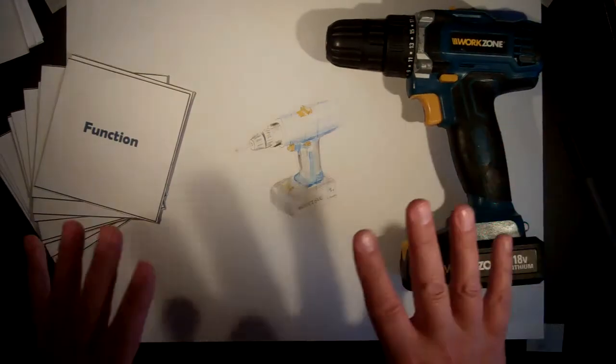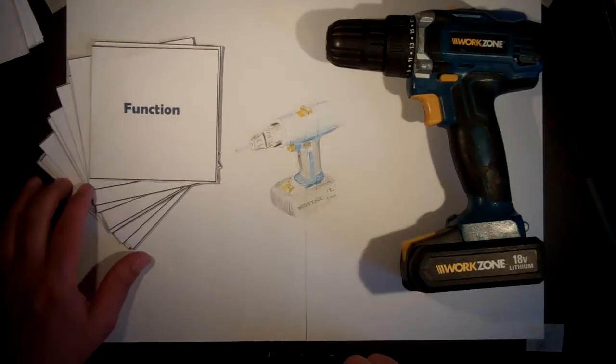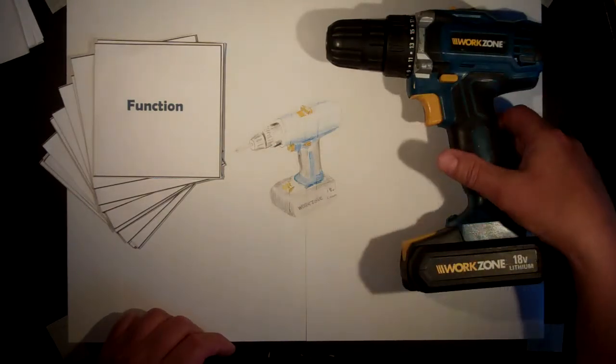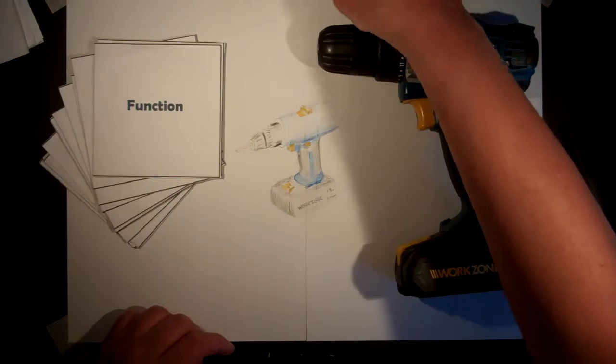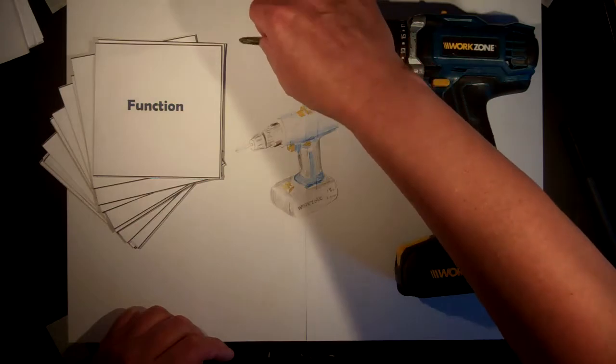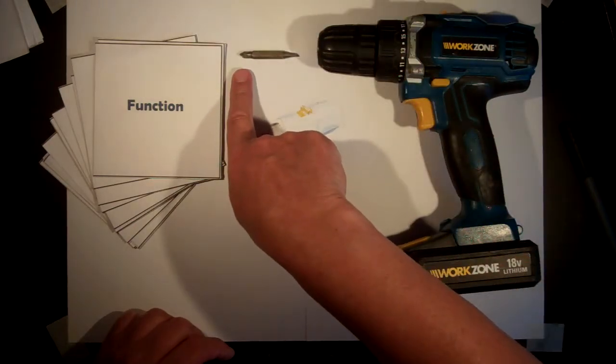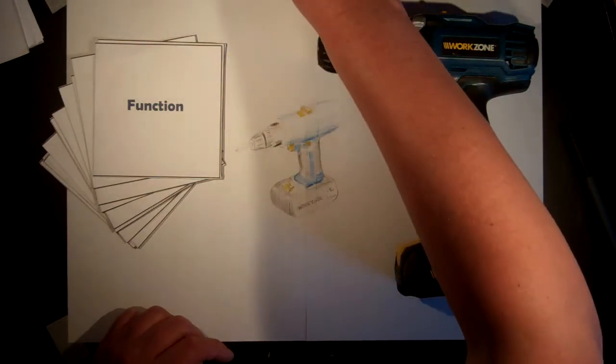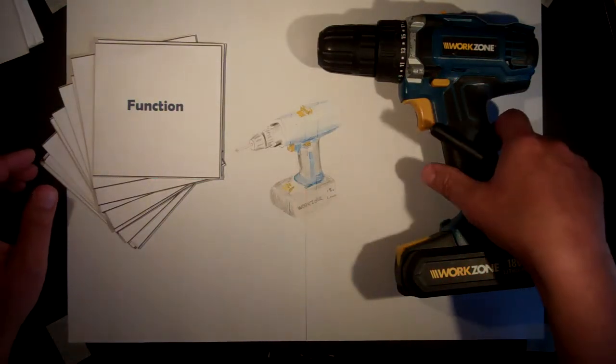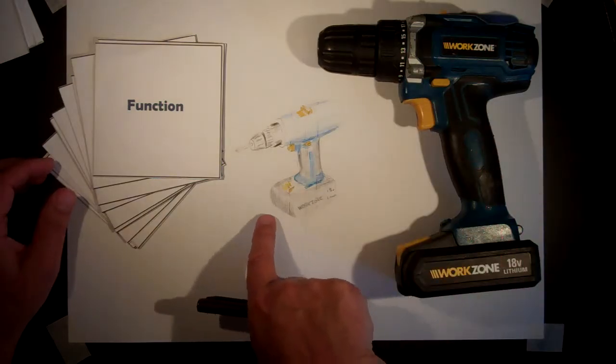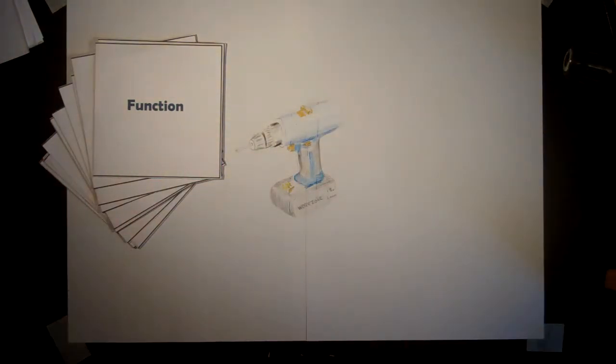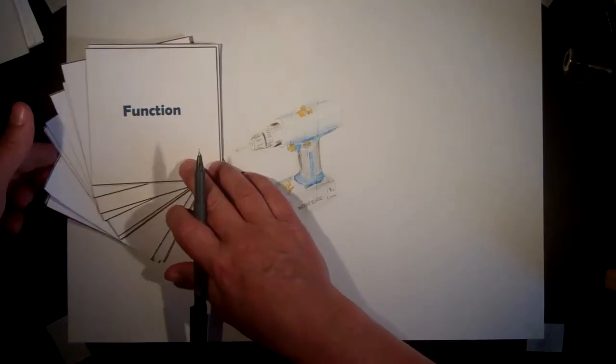And before we go into it too much, let's just have a look at this first one, the function. What is the function, the primary and secondary function of this product? So the primary function might well be to drill holes, but it also might have a secondary function, it might be to drive screws into wood or the wall. So it's got more than one function. Now the easiest way to do this is to break it down into the features that we can identify on the product. So as we go around the product, I'll just identify what these features are.